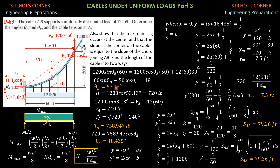Using a calculator, theta B is 53.13 degrees. Having found this, the horizontal component of tension, which is constant, is 1200 cosine 53.13 degrees, which equals 720 pounds. Then from the summation of forces in Y: 1200 sine 53.13 degrees equals V_A plus 12 times 60, so V_A is 240 pounds.